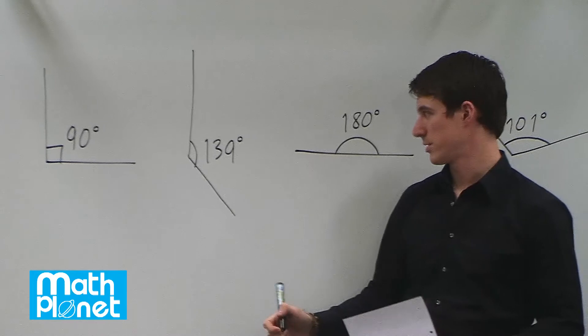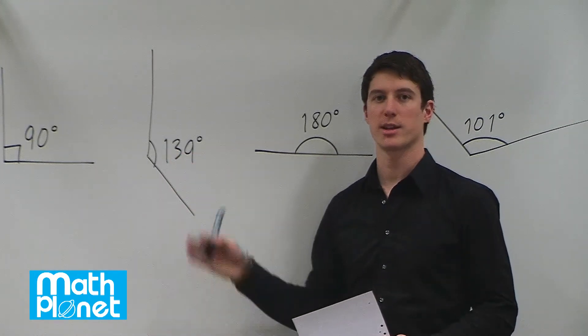Next we have an obtuse angle. So basically the angle is greater than 90, so this is obtuse.